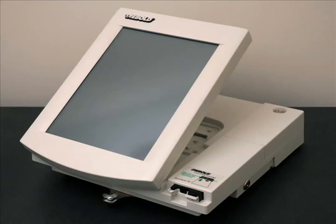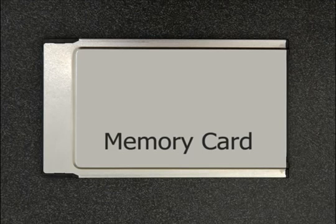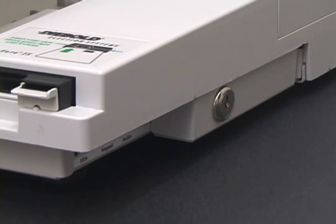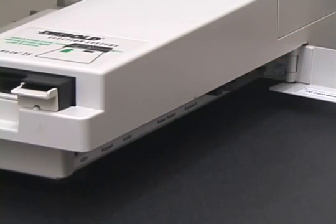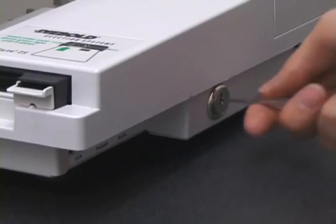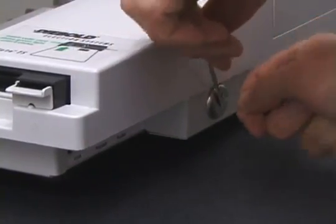This vote-stealing attack requires injecting malicious software into the voting machine. Anyone who has access to a voting machine for a few minutes can install malicious code. Here is one way to do so: in advance, we prepare a memory card containing our malicious software. When we get a few minutes alone with the machine, we first open the side door. We can do this with a key — there are thousands of keys in circulation, and any hardware store will copy them. Even without a key, the lock is easily picked. One member of our team can consistently pick the lock in less than 10 seconds.